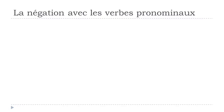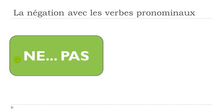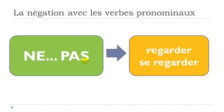La négation avec les verbes pronominaux. So we can start right now. When we talk about la négation in French, normally we are talking about two different parts. The first one is NE and the second one is PAS. In that video we will focus on les verbes pronominaux, so we are talking about the verbs that will have this SE in front of them at the infinitive form.